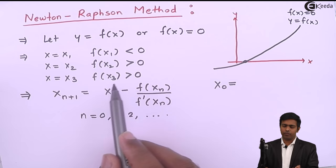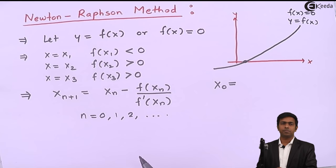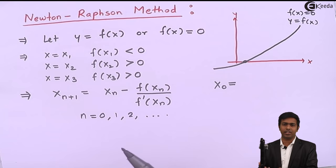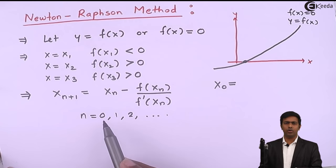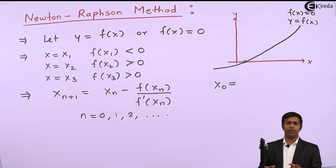By putting n = 0 we get x₁. We then use that value of x₁ in the next iteration to get x₂, and use x₂ in the next iteration to get x₃, and so on. We continue until we get two consecutive iterations with the same value. Whenever two consecutive iterations give the same value, we stop and declare that value as the root of our equation.